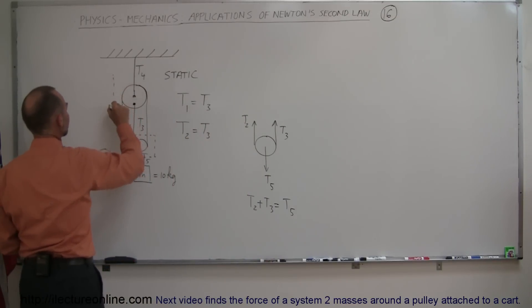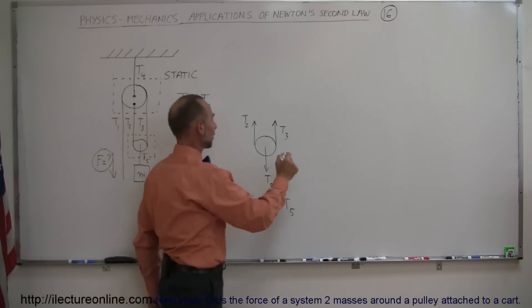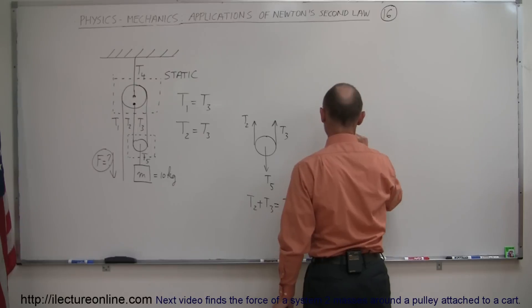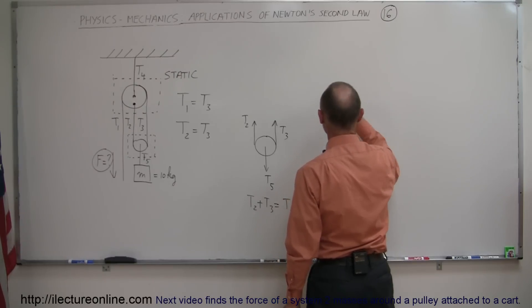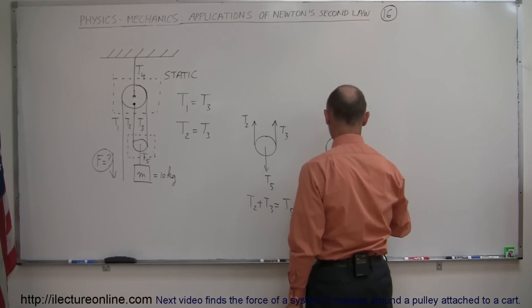Now if we look over here, we can see that if we draw another free body diagram, put it right here, we have one tension coming up this way, which is T4. We have three tensions downward, so we have T1, we have T2, and we have T3.